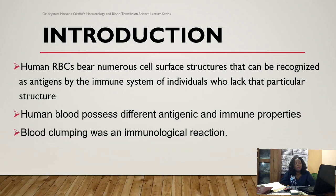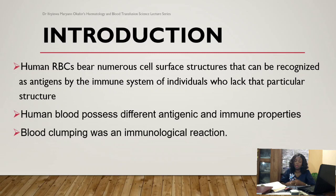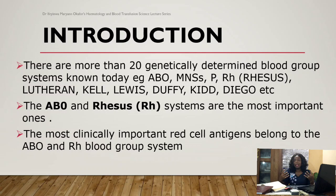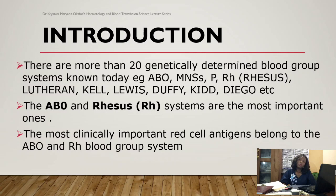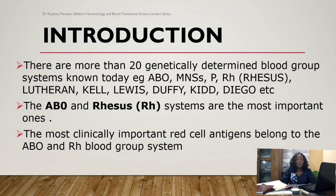Human blood possesses different antigenic and immune properties that can be recognized. These immunogenic substances have the capacity to trigger an immune response when they are introduced into a system that does not contain that particular antigen. This is actually the characteristic of different blood group systems, especially the ABO blood group system. There are so many of them — we have about 40 or more — including systems like ABO, the one we are discussing today.